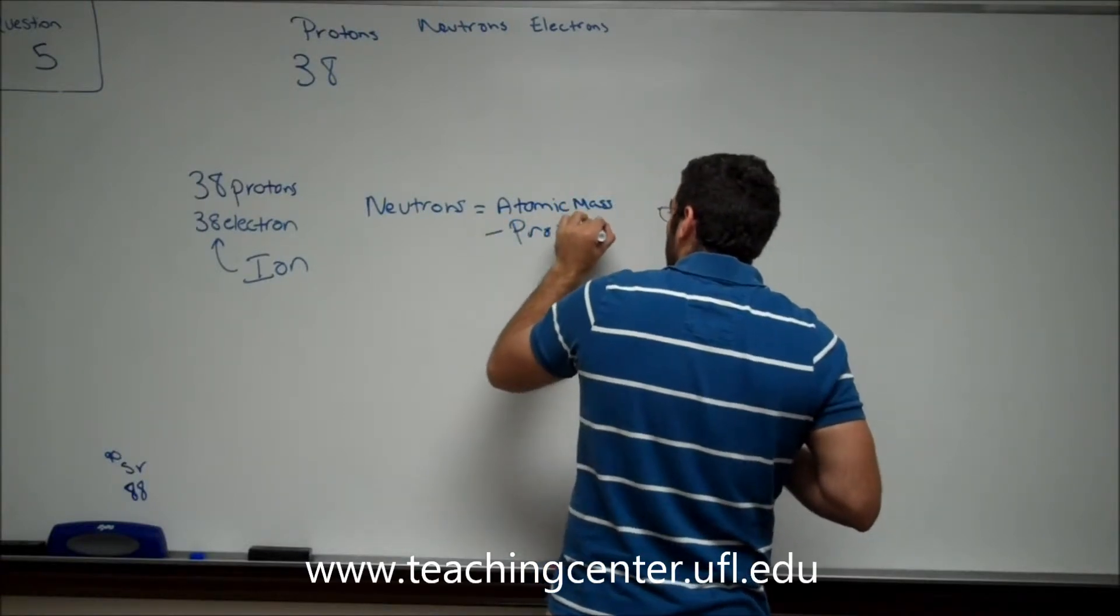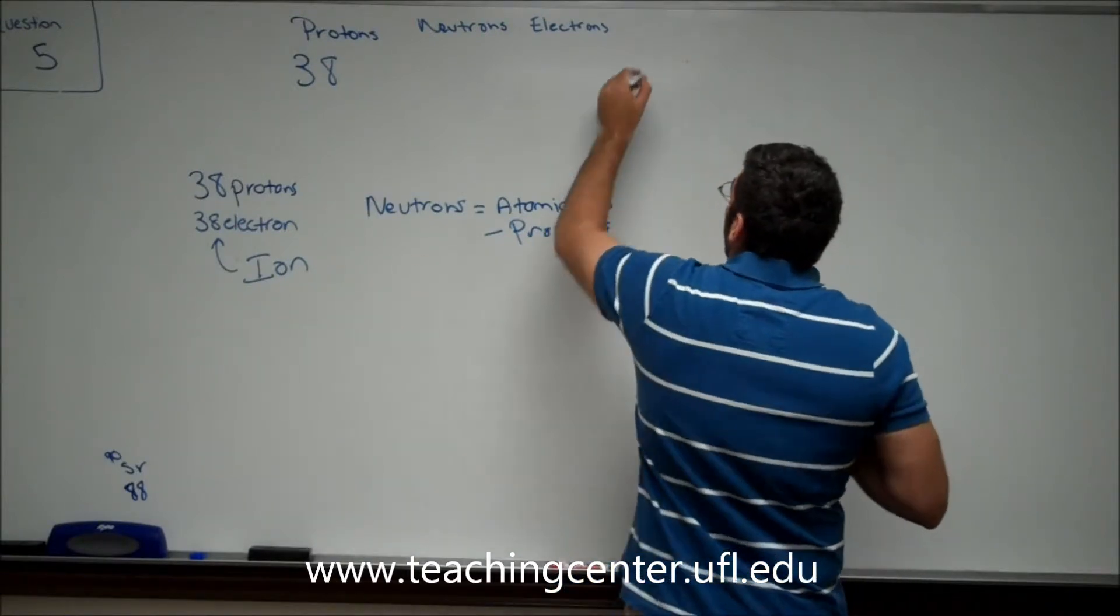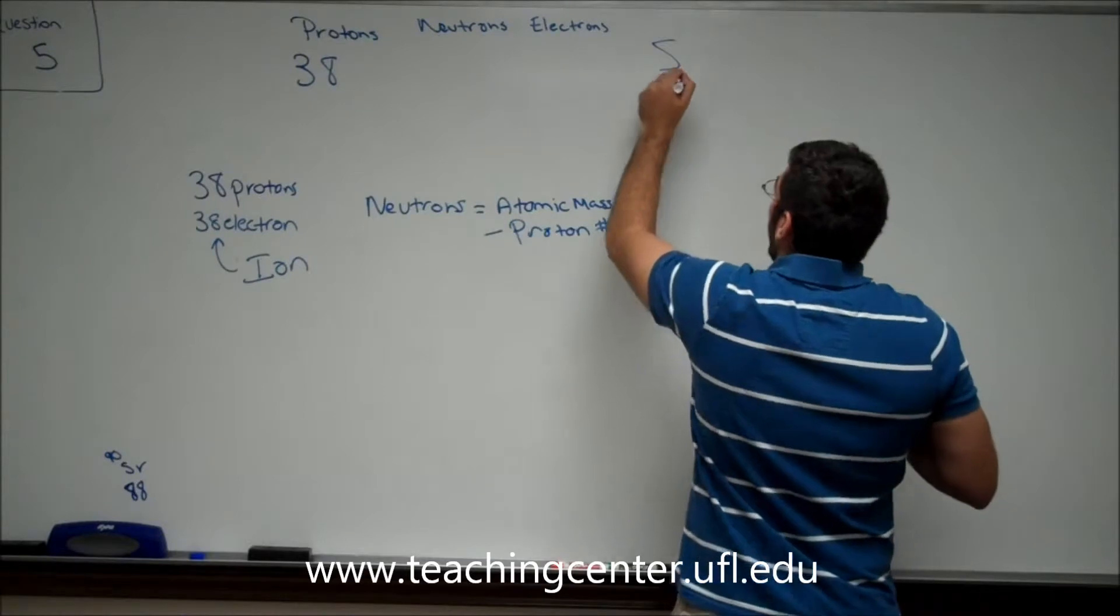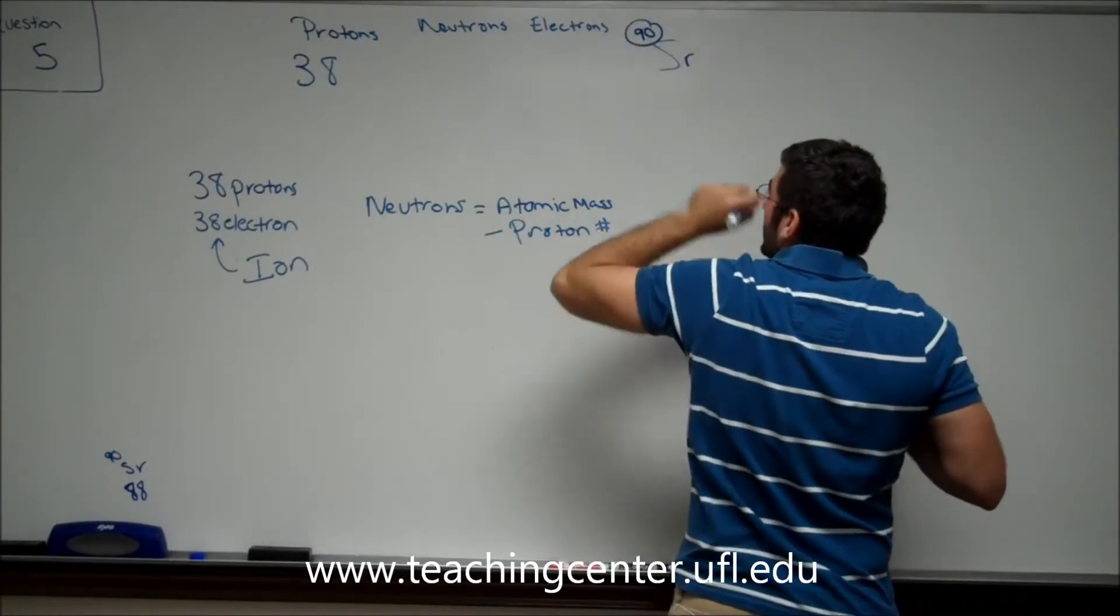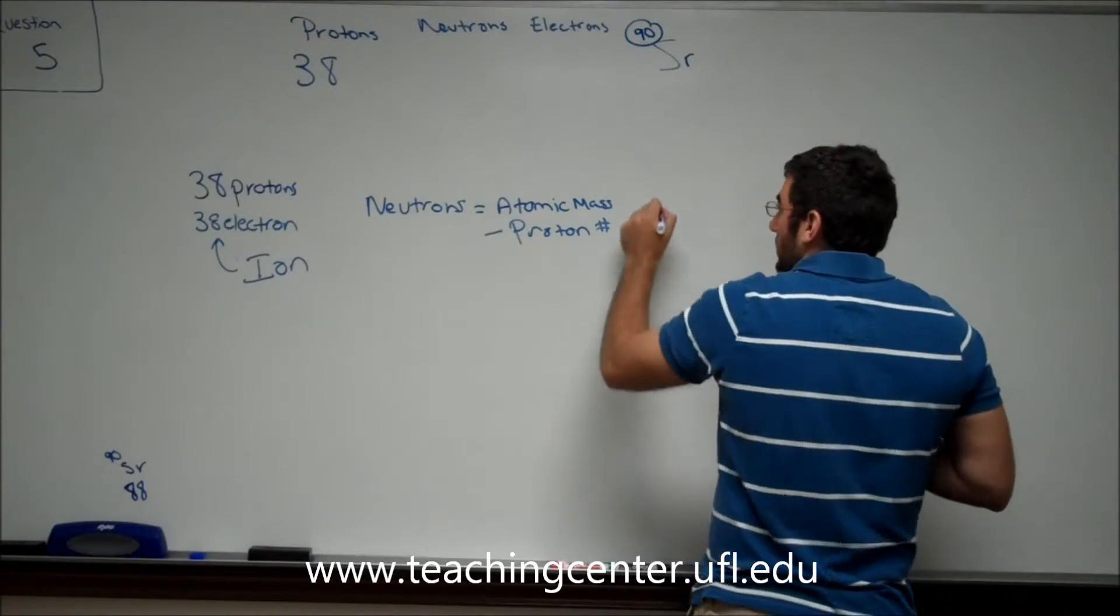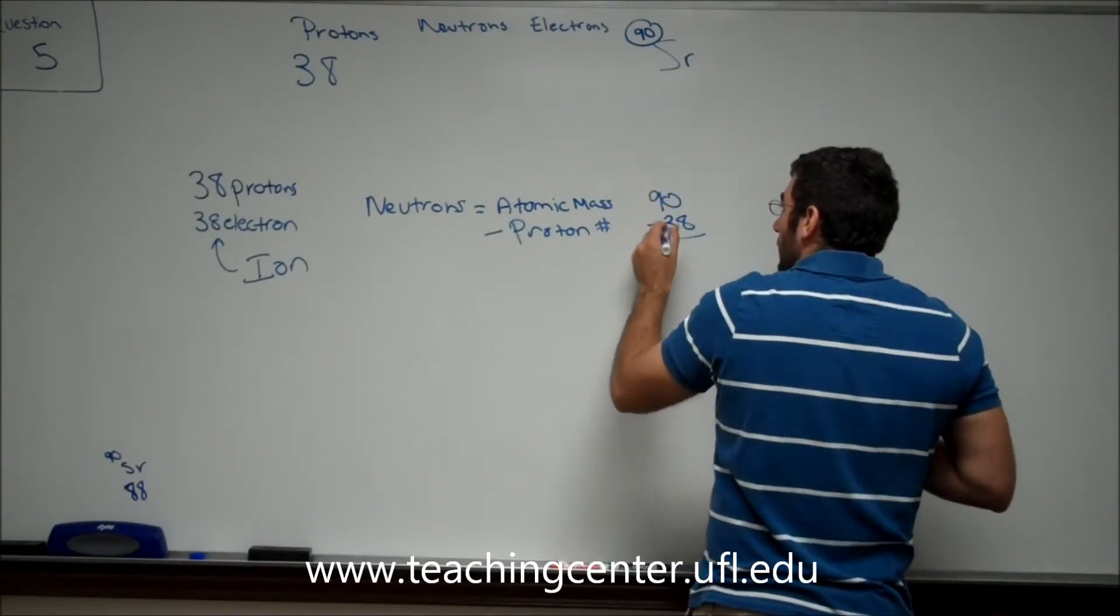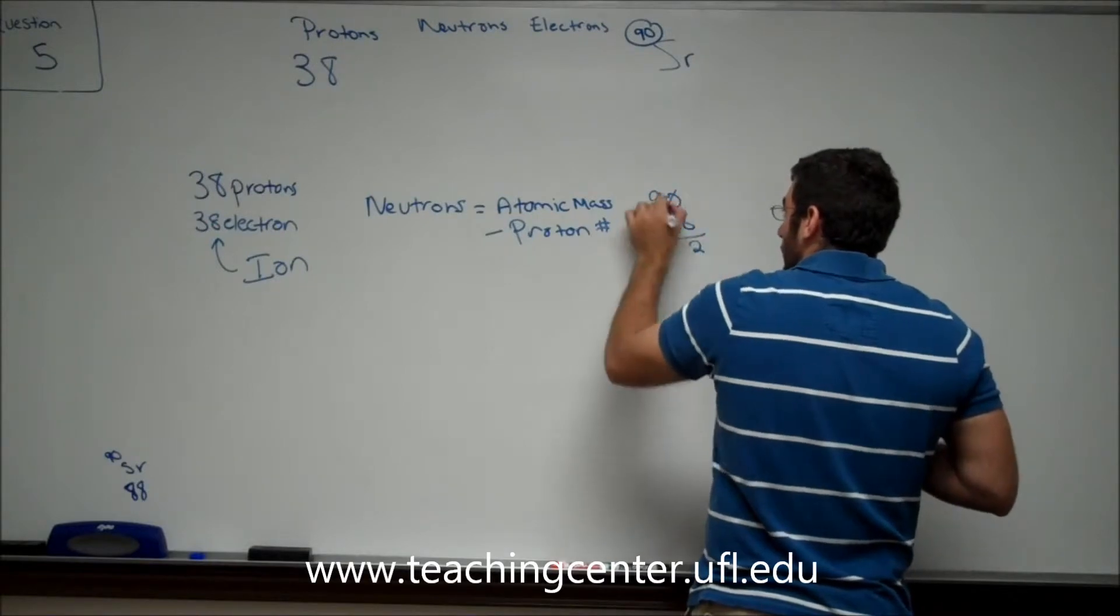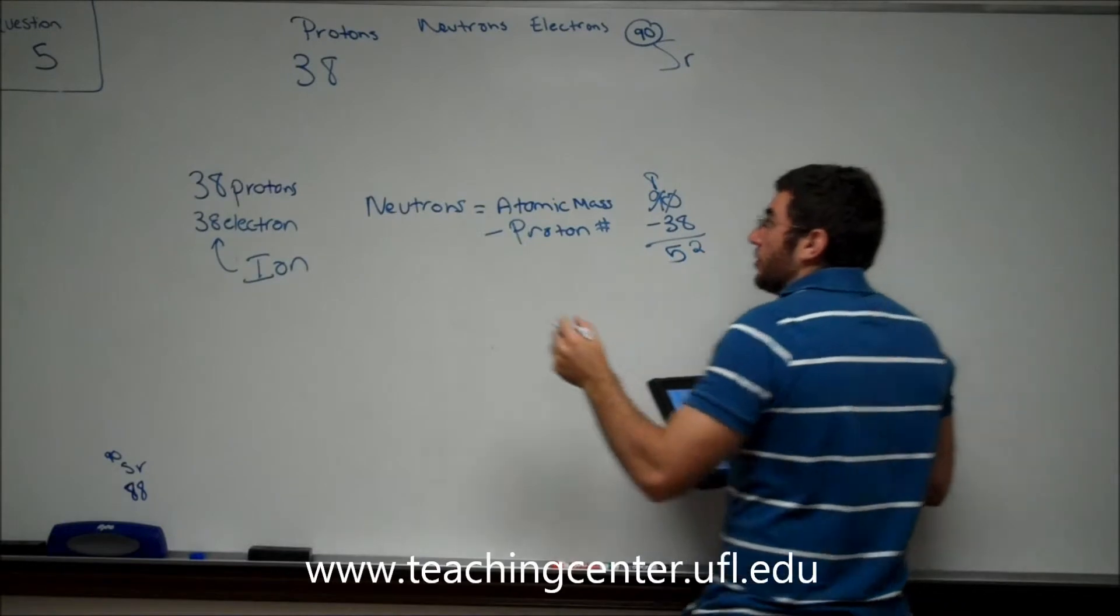Here, it told us we're dealing with strontium-90. So this is our atomic mass, and we have 38 protons. So we're going to do 90 minus 38, which leaves us with 52 neutrons.